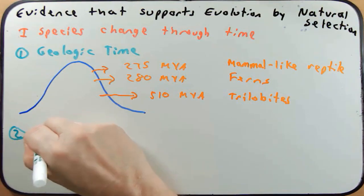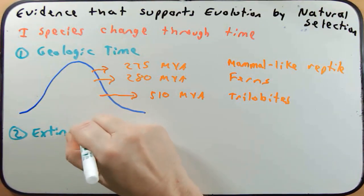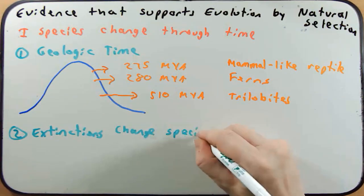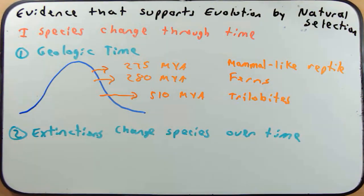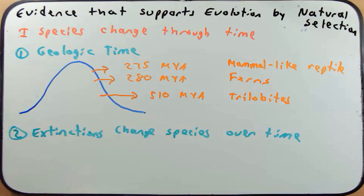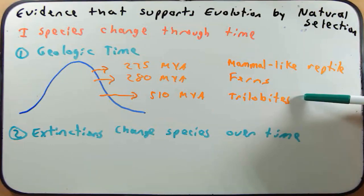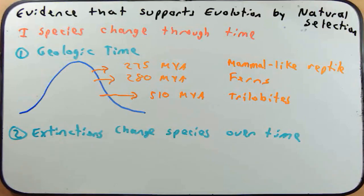The second piece of evidence is extinctions — they show species change over time. In the early 1800s, scientists found species in the fossil record that didn't exist anymore, and over time it became clear they were never going to find those species on Earth, so they were determined to be extinct. Trilobites, mammal-like reptiles, woolly mammoths — we don't see them anymore because they're extinct. If species have gone extinct over time, that means Earth's species have changed over time.